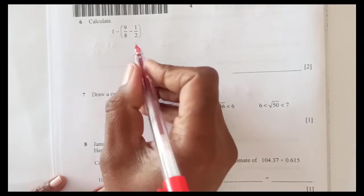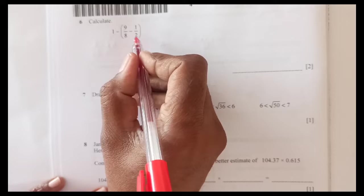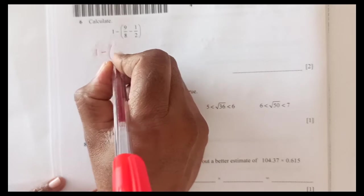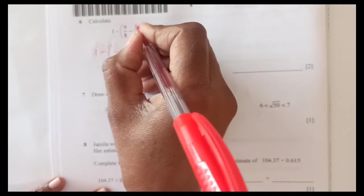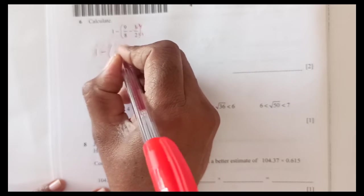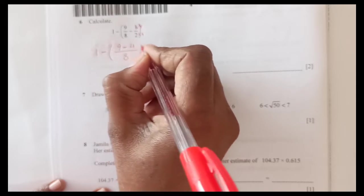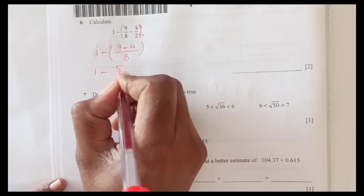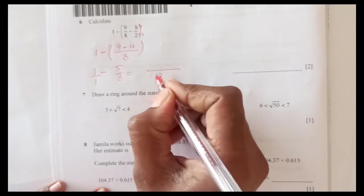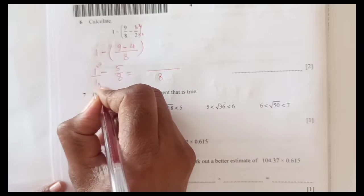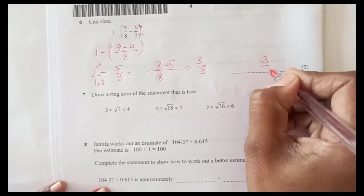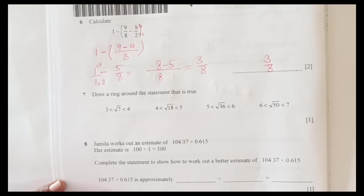Question number 6: calculate 1 minus 9 over 8 minus half in bracket. We will do step by step. First we are going to solve in bracket. LCM is 8, we can make this times 4 times 4, 2 times 4 to make the denominator same. So this is 9 minus 4, so this is 1 minus 5 over 8. Again we can take LCM, LCM is 8, this is going to be times 8 times 8. This is 8 minus 5, that is 3 over 8. So 3 over 8 we will write in the answer column.